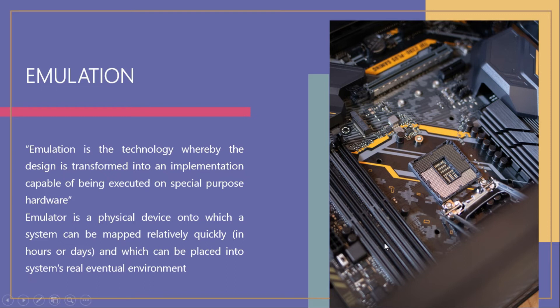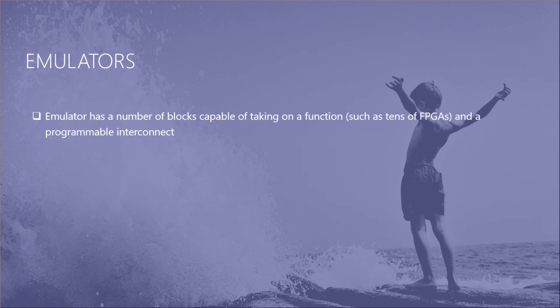An emulator is a physical device onto which a system can be mapped relatively quickly — in hours or days — and which can be placed into a real environment that makes it look like the same system we are going to implement. An emulator has a number of blocks capable of taking functions, such as tens of FPGAs, where each FPGA handles one function. For a big SOC, we may divide it into 10 different modules and assign each to an FPGA.